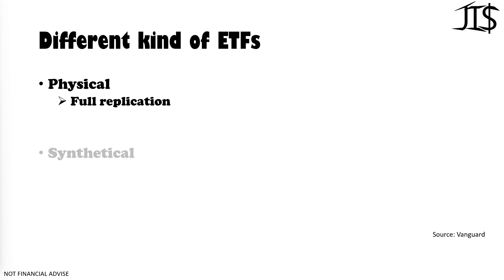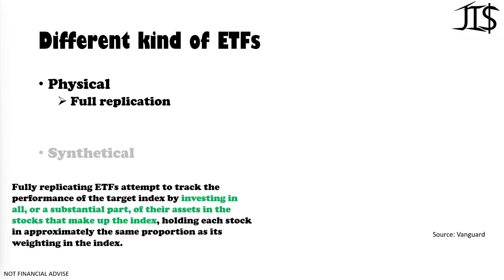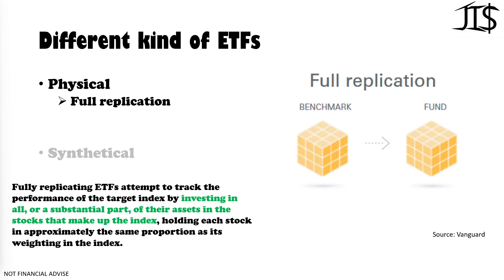The first type of physical ETF is the fully replicated one. I like fully replicated ones and also the sampling types. Fully replicated ETFs attempt to track the performance of the target index by investing in all or a substantial part of their assets in the stocks that make up the index, holding those stocks in approximately the same proportion as their weighting in the index itself. When you look at the fund it looks exactly the same as the index.